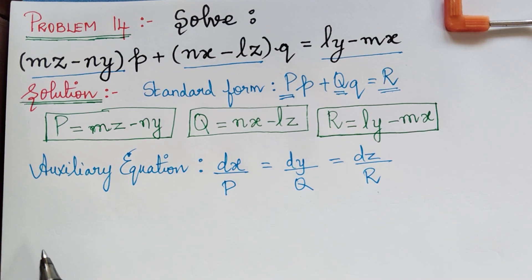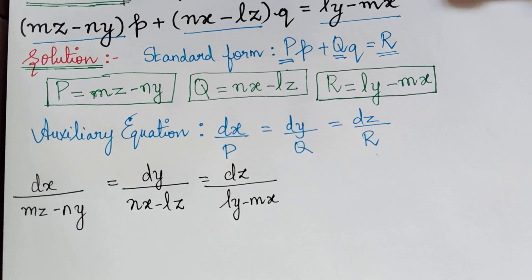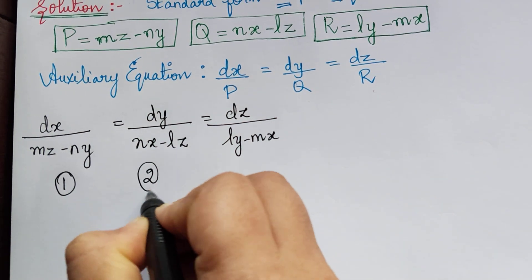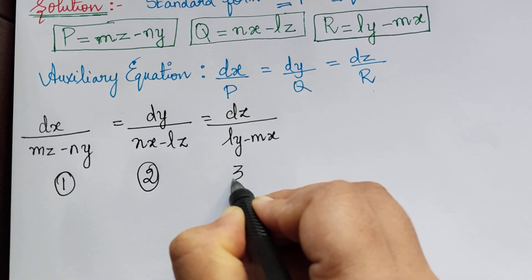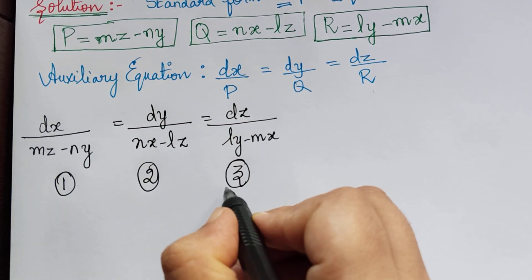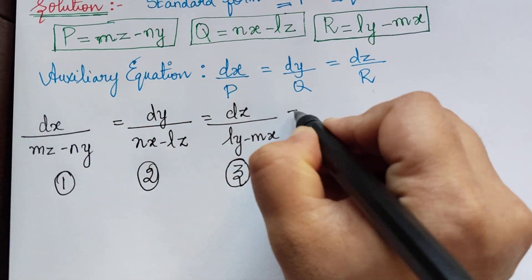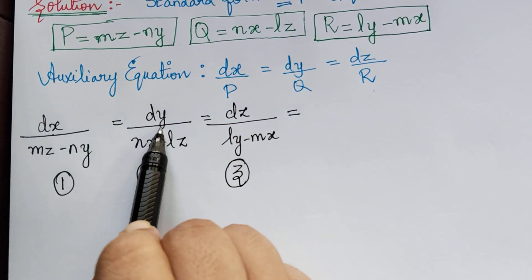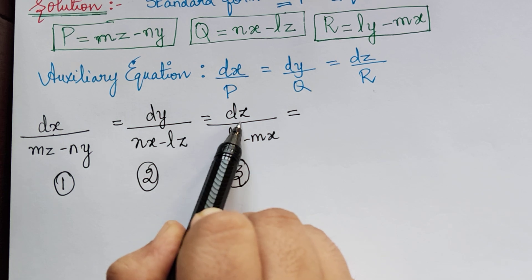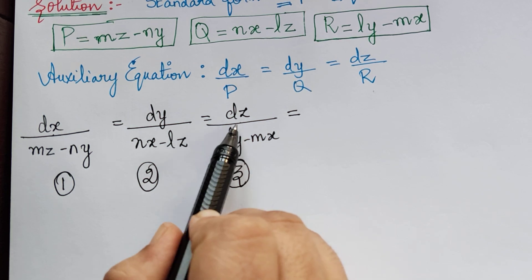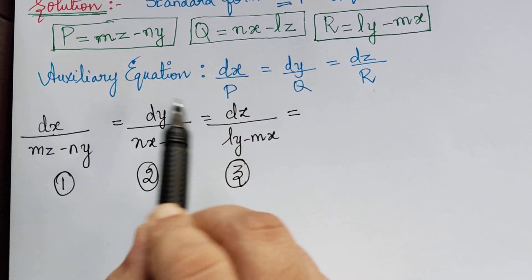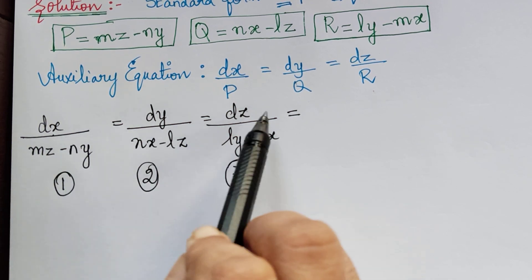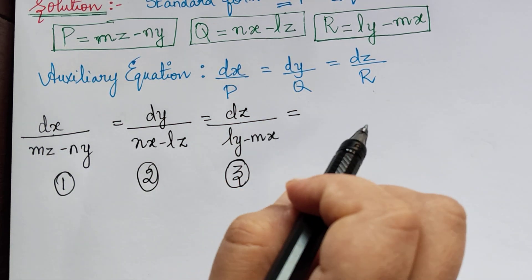So these are the auxiliary equations. We shall mark these as 1, 2 and 3. By the method of multipliers, we have to form a fourth ratio given by ldx plus mdy plus ndz in the numerator, using multipliers and adding the numerators and denominators separately to find a new fourth ratio.